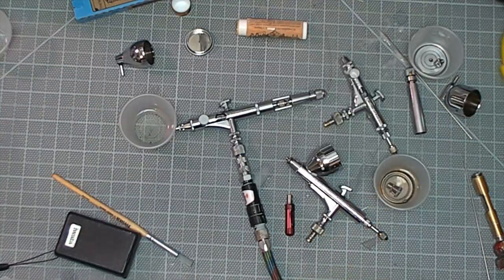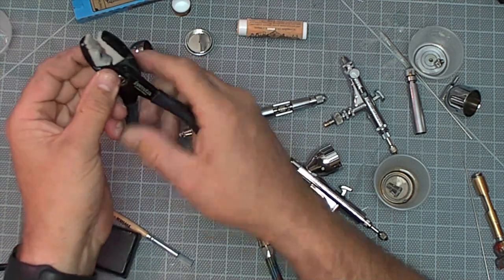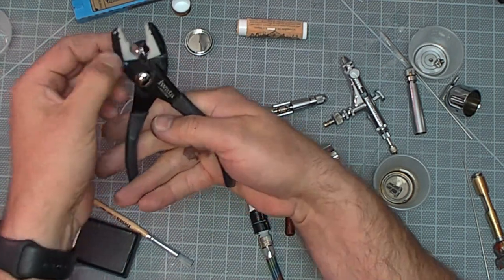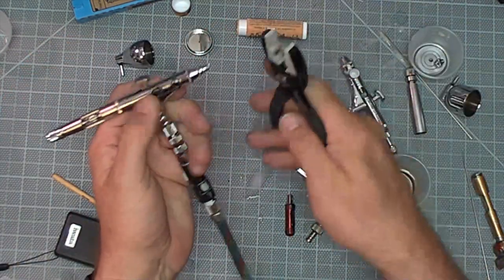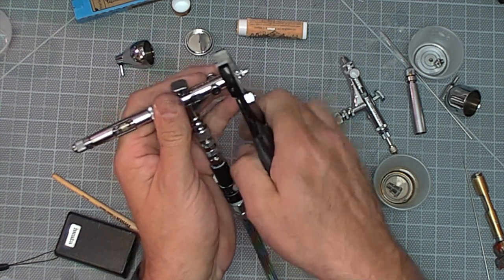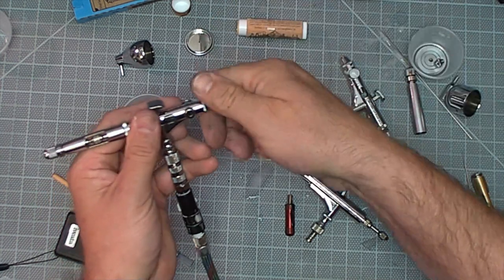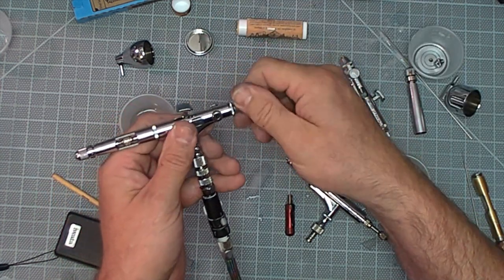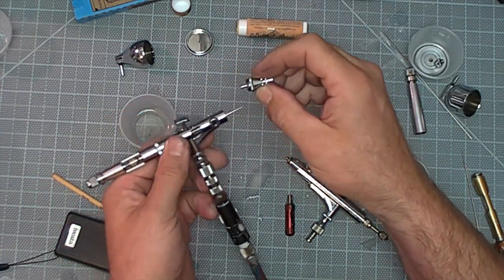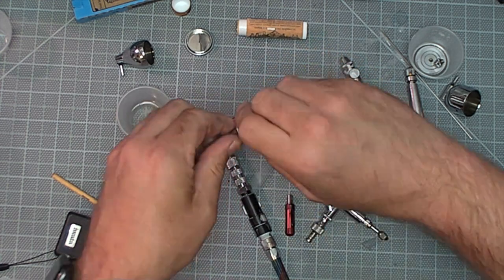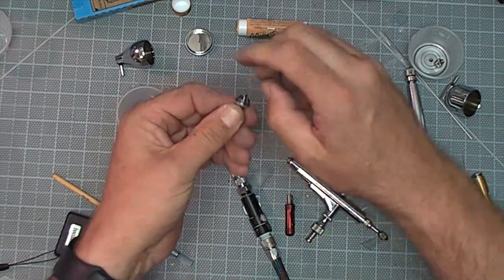Use the right pliers. These pliers have a nice Teflon grip handle that's not gonna ruin the coating on the airbrush or strip the threads. Pull the whole head assembly off and I'm gonna just clean out what was there.